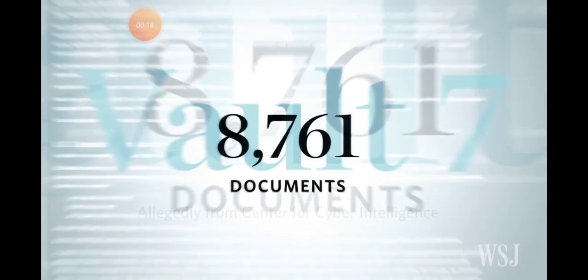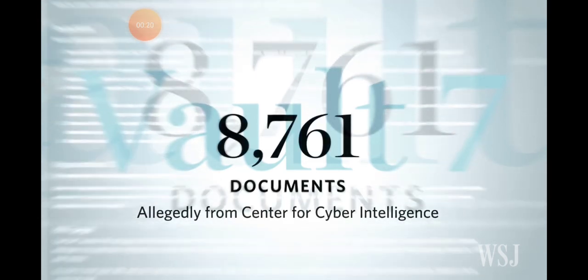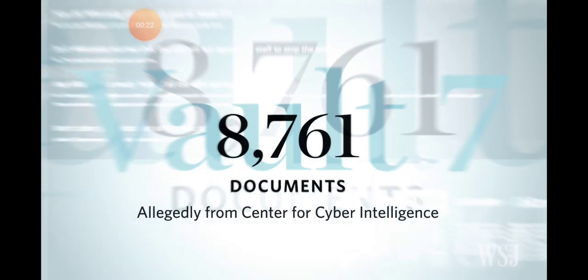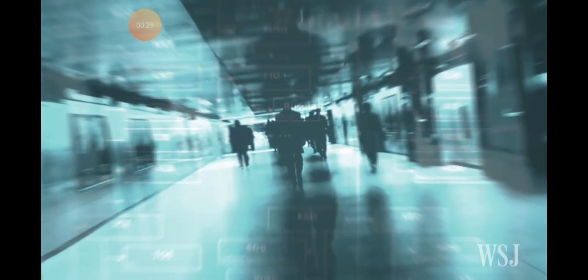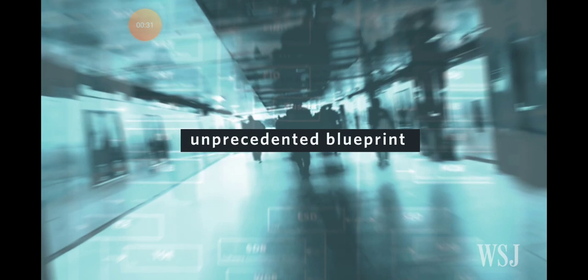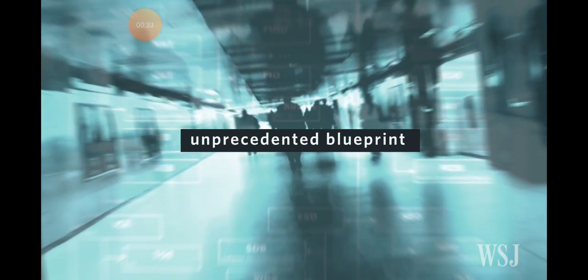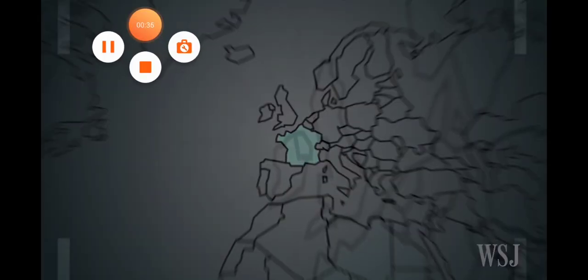The series of files, dubbed Vault 7, consists of 8,761 documents and files allegedly from the CIA's Center for Cyber Intelligence. Though many of the tools detailed in the documents are the kind of things you'd expect from an intelligence agency, they provide an unprecedented blueprint for how the CIA could hack individuals they're spying on. Here's how they could work.